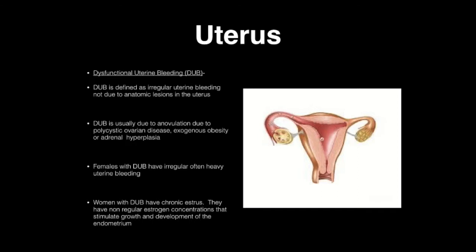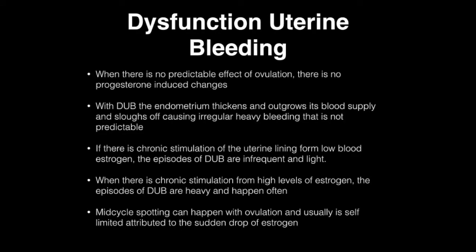Females with dysfunctional uterine bleeding often have heavy uterine bleeding. Women with dysfunctional uterine bleeding usually have chronic estrus — they have non-regular estrogen concentrations that stimulate growth and development of the endometrium. When there is no predictable defect in ovulation, there are no progesterone-induced changes. The endometrium thickens, outgrows its blood supply, and sloughs off, causing irregular heavy bleeding that is not predictable.